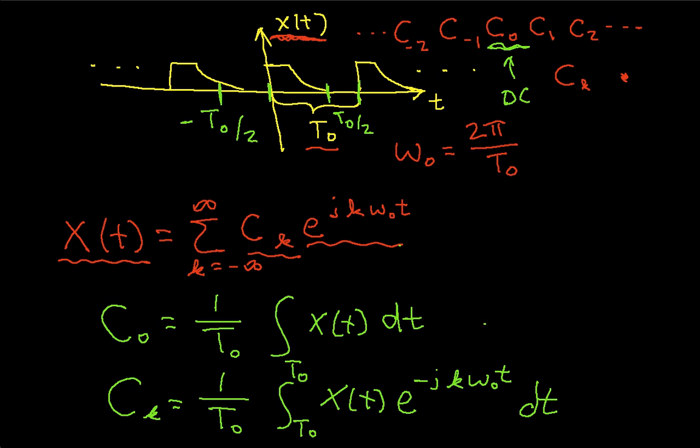So this is for the case where k is equal to 0. This is for the case where k is not equal to 0. And once we've computed the c sub k's, then if we want to, we can reconstruct x of k this way.